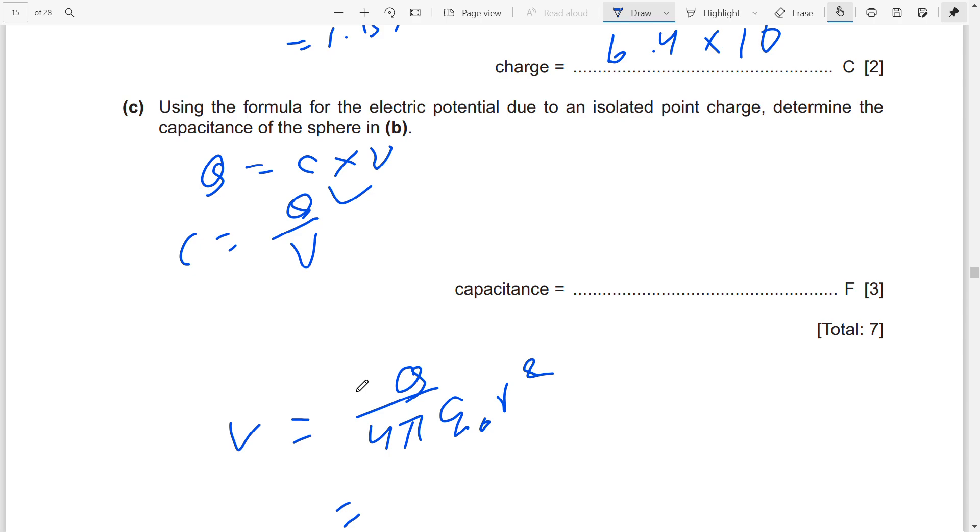Epsilon naught value, please wait for a while. The epsilon value is 8.85 × 10⁻¹². Times r squared. How much r do we have? We have r = 2.1 cm.